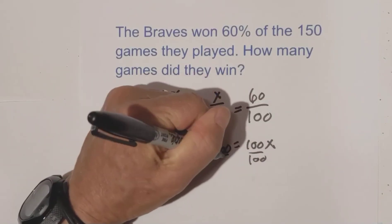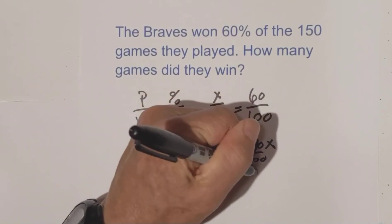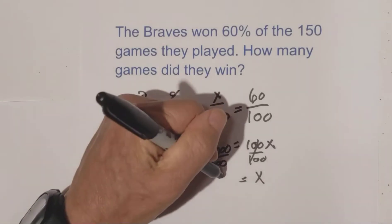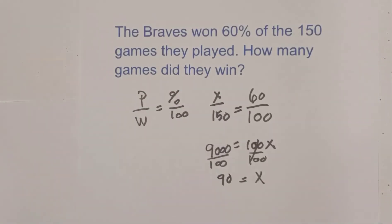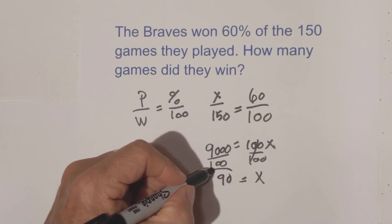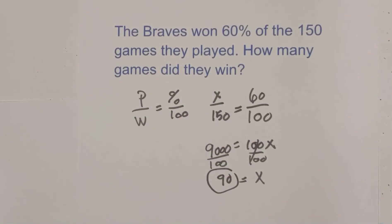60 times 150 is 9000 is equal to 100x because x times 100 is 100x. Now we divide both sides by 100. Those cancel out. 9000 divided by 100 is 90. So the original question is how many games did they win? They won 90 of their 150 games which is 60%.